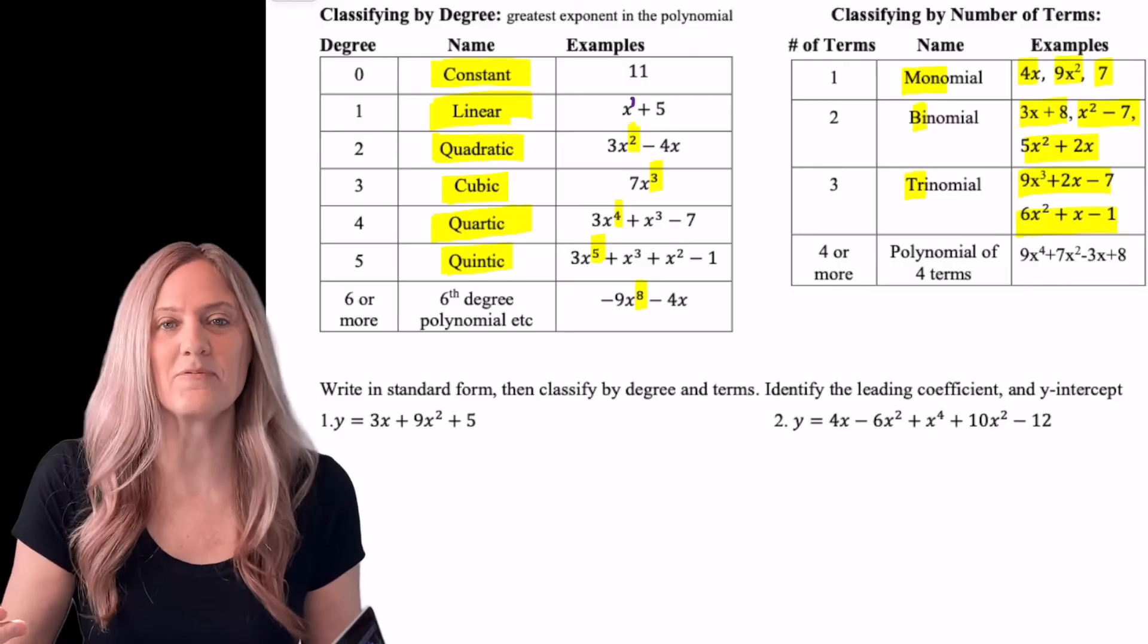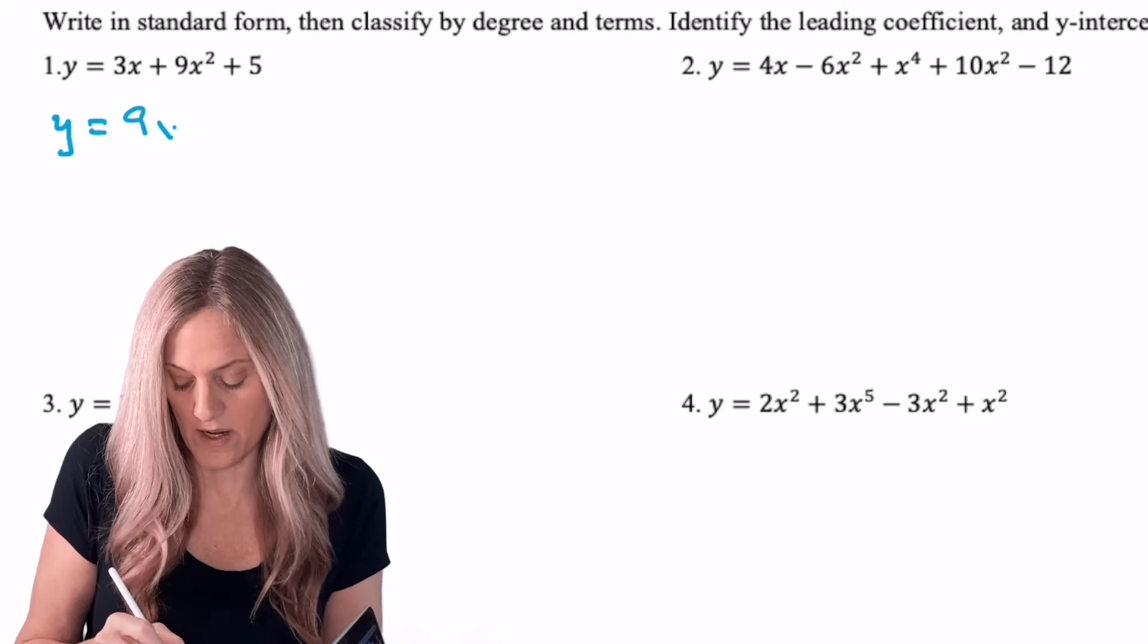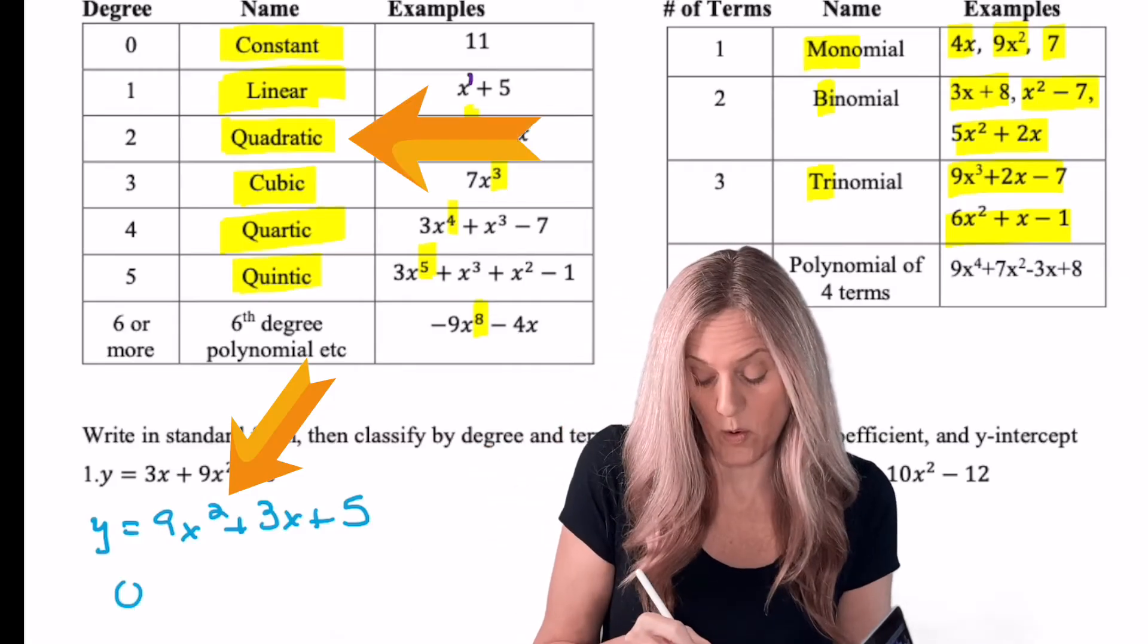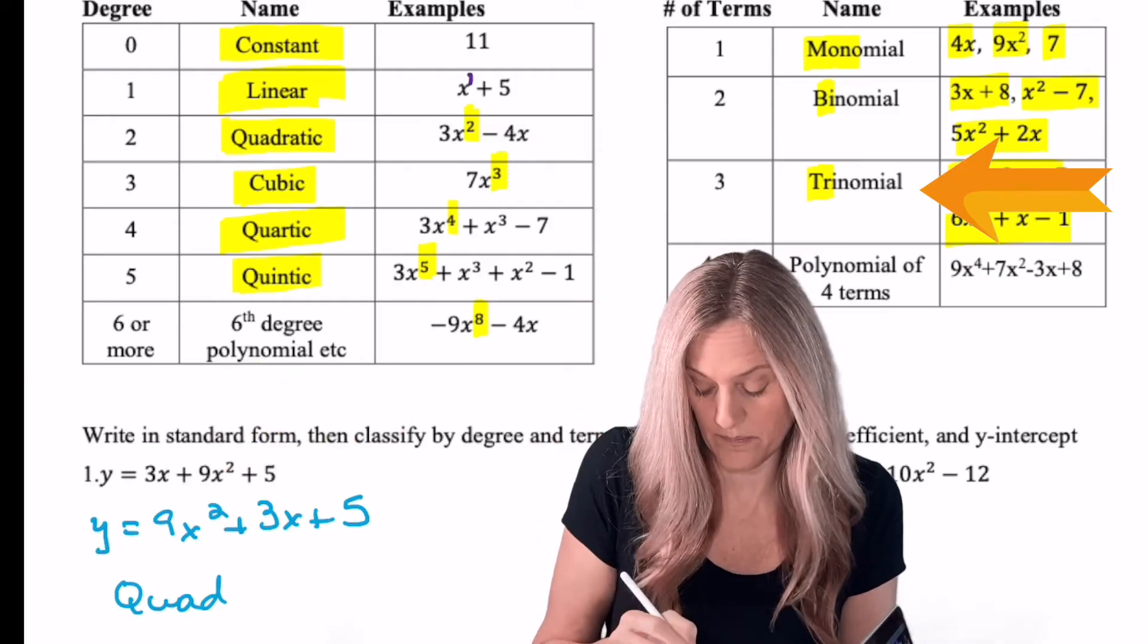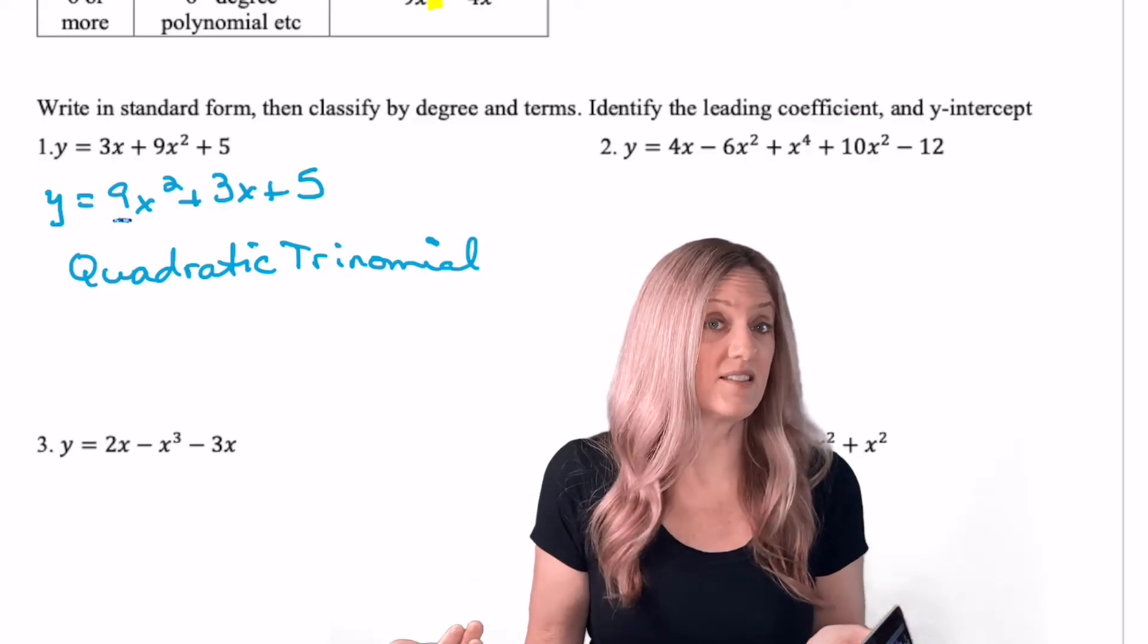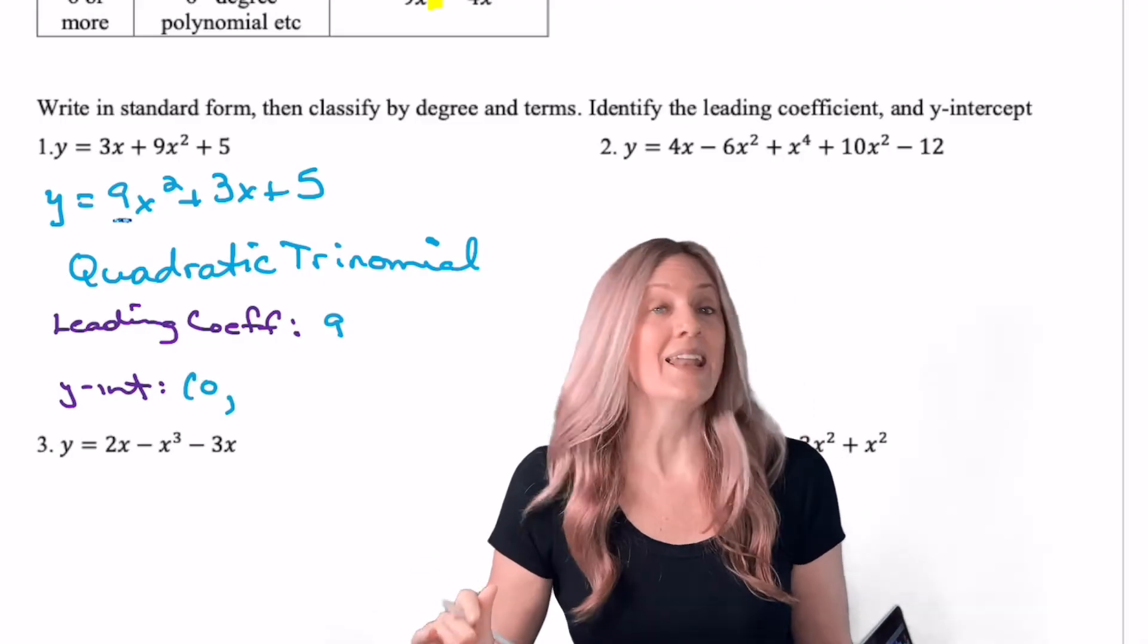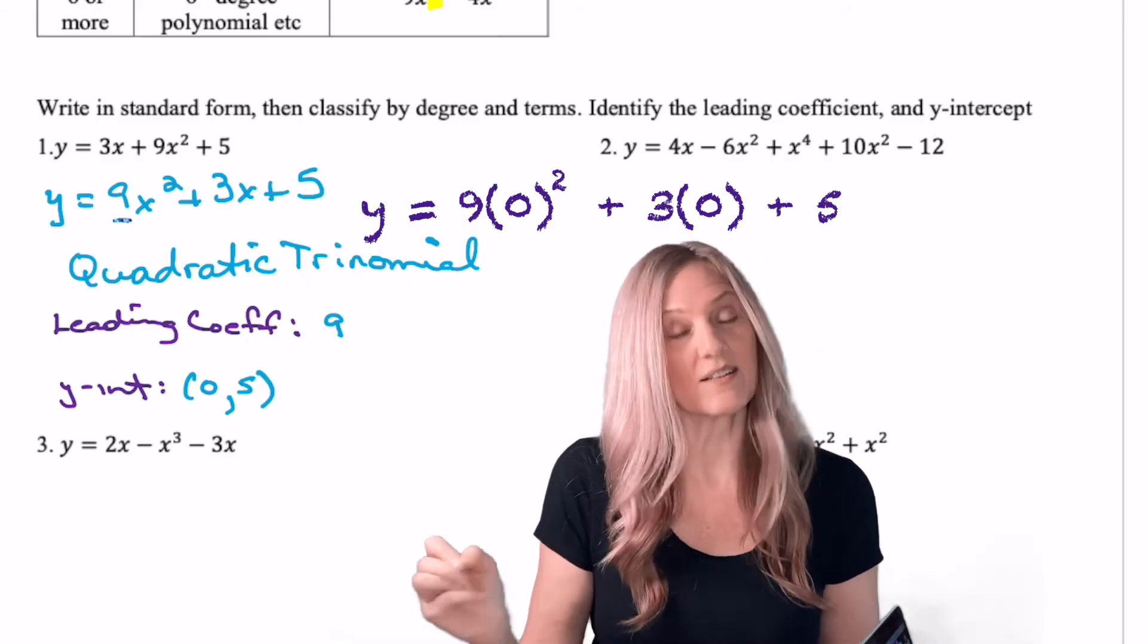Now let's do a couple of practice problems. Number one, let's put it in standard form first: 9x squared plus 3x plus 5. Two is the largest exponent, so I have a quadratic. How many terms? Three - trinomial. Leading coefficient: we look at the highest order term and what number is in front, so the leading coefficient is 9. For the y-intercept, we plug in zero for x and evaluate: 9 times 0 squared plus 3 times 0 plus 5. We get the point (0, 5).